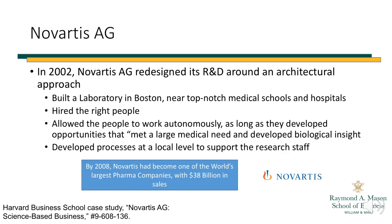Our final example was a successful approach that didn't involve acquisition. In 2002, Novartis AG redesigned its R&D around an architectural approach. First, they built a laboratory in Boston near top-notch medical schools and hospitals, then hired the right people. They allowed people to work autonomously as long as they developed opportunities meeting a large medical need and developed biological insight. They developed processes that supported rather than hindered the research staff. By 2008, Novartis had become one of the largest pharmaceutical manufacturers and sellers in the world.